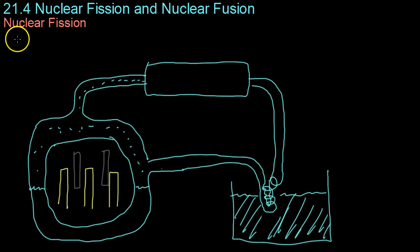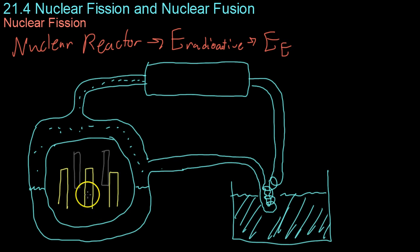So using these chain reactions, you can power a nuclear reactor, which basically just converts your energy from your radioactivity into electricity that you can use. And it does this through heat, basically.